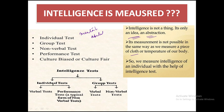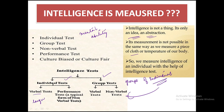Intelligence tests are classified into two types: individual tests and group tests. Individual tests are called individual tests, as the name suggests, and tests for groups of individuals are known as group tests. These are further divided into verbal tests, where language is used, and performance tests or non-verbal tests, where no language is required.